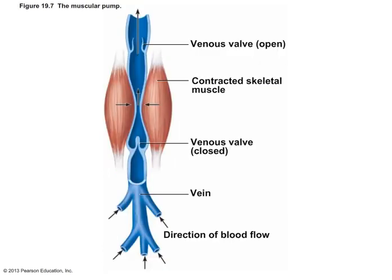Veins' one-way valves keep blood moving in a single direction — toward the heart. Blood pressure in veins is very low because the hydrostatic pressure generated by the heart is lost crossing the capillary bed. The force driving blood back to the heart is the skeletal muscle pump: veins cross several skeletal muscle groups, and as those muscles contract during movement, they squeeze the veins and force blood toward the right atrium. The valves ensure blood continues in one direction, encouraging venous return.